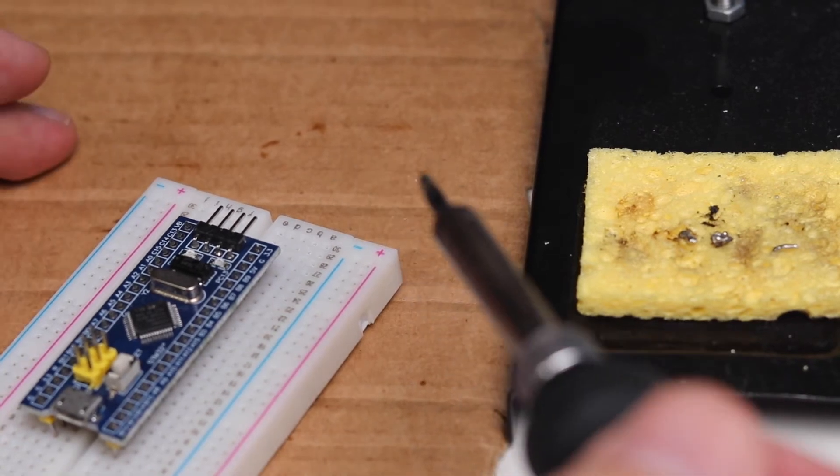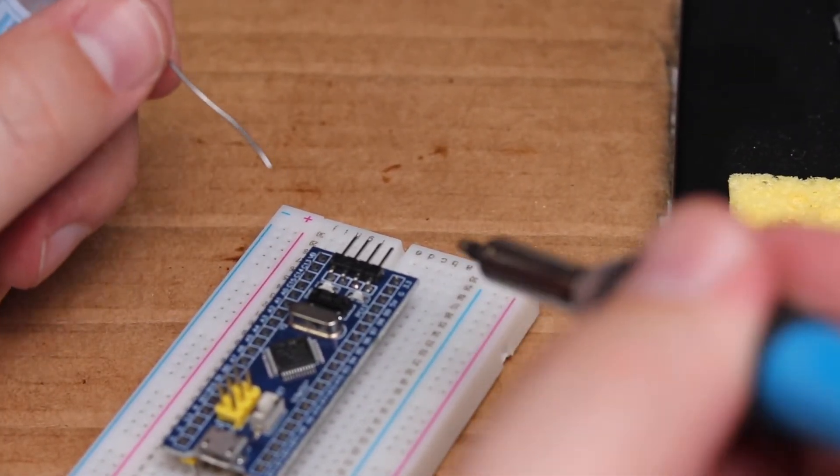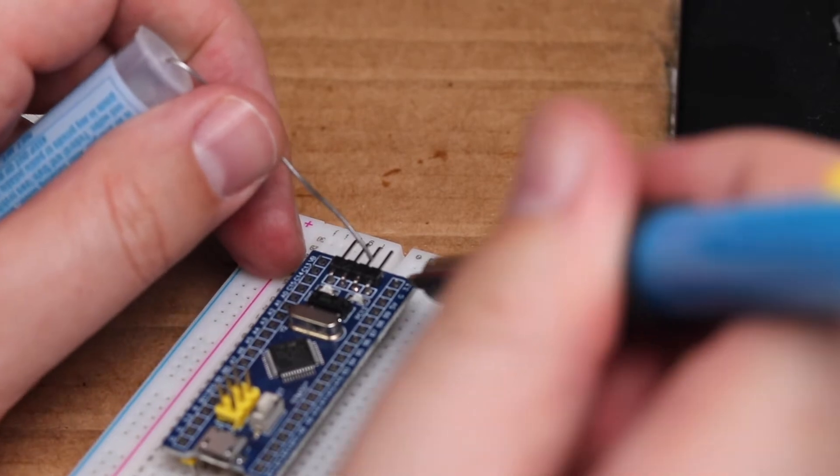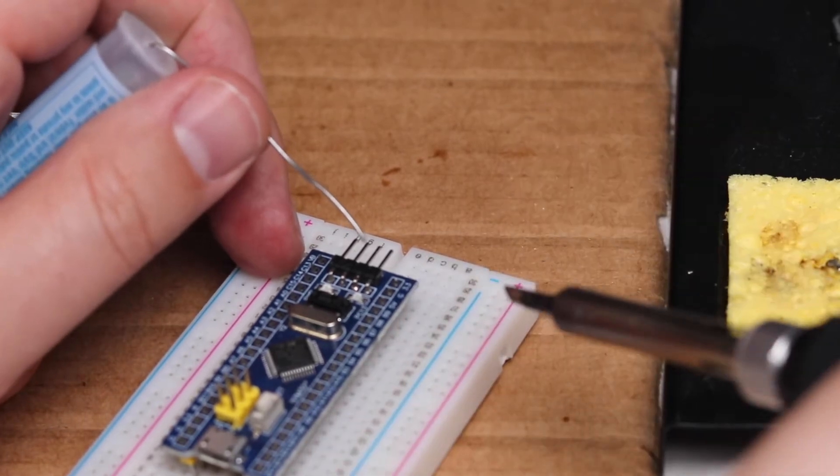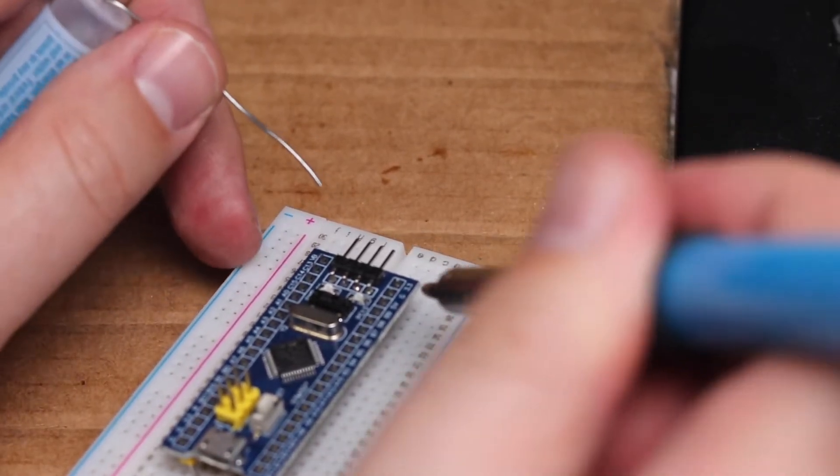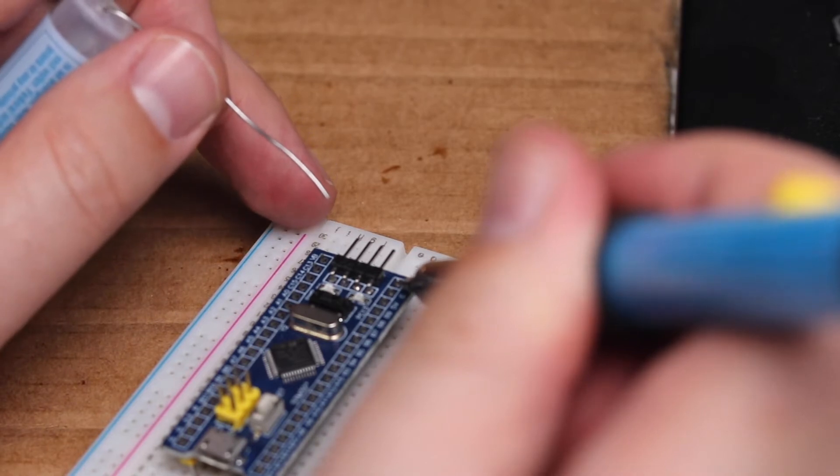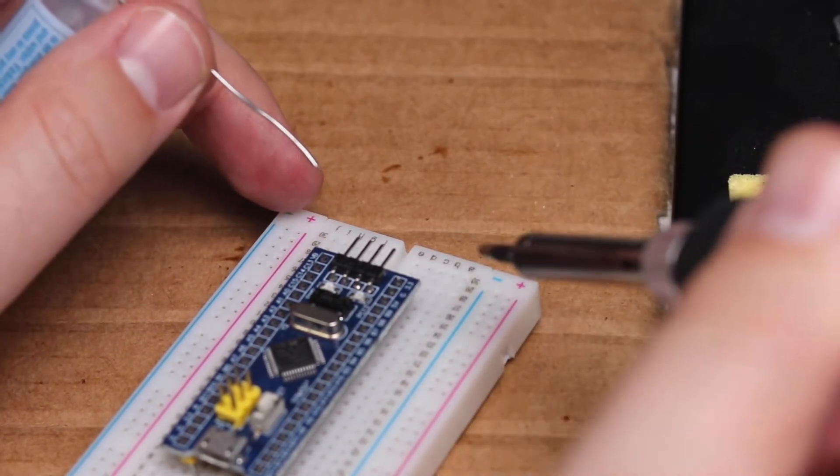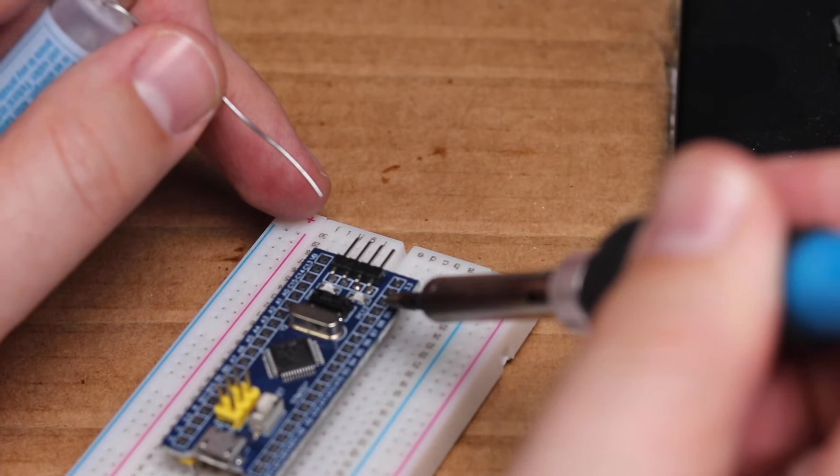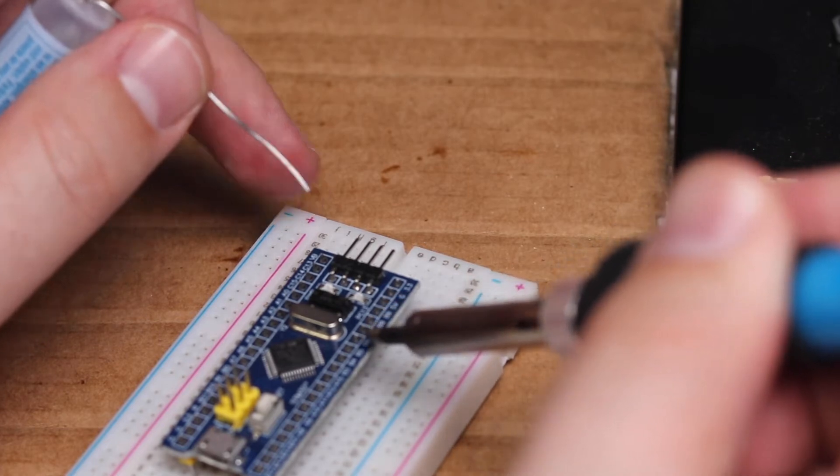We're going to do a technique called drag soldering. I'm going to wet the iron, meaning put solder on it, then I'm going to heat up between two pins for about two seconds and then move on to the next two pins and drag the soldering iron down.